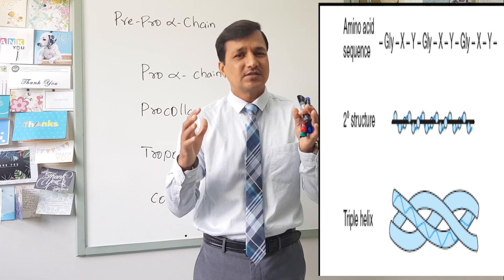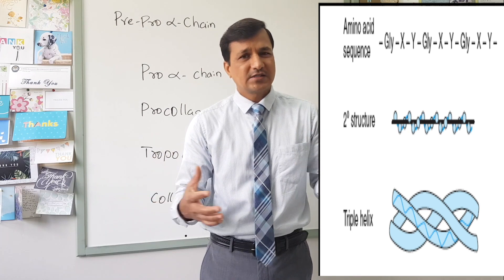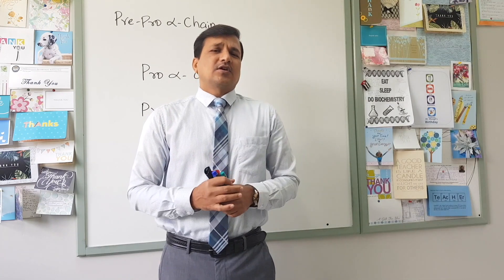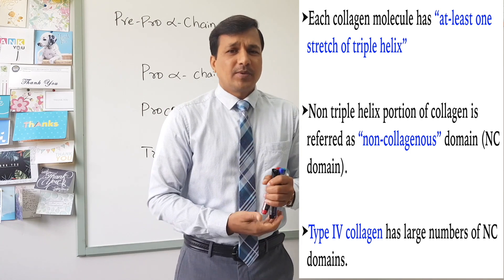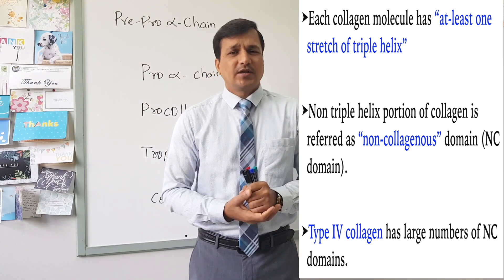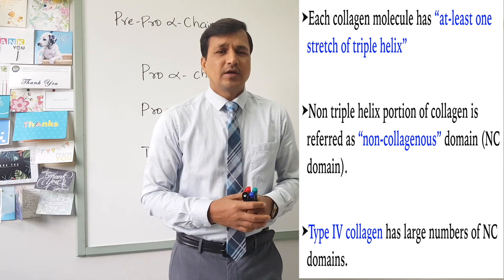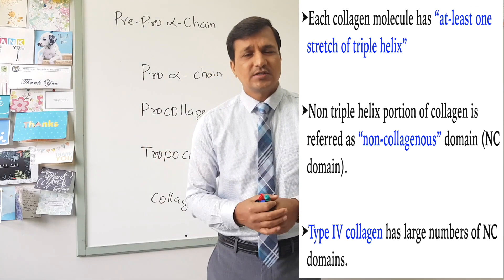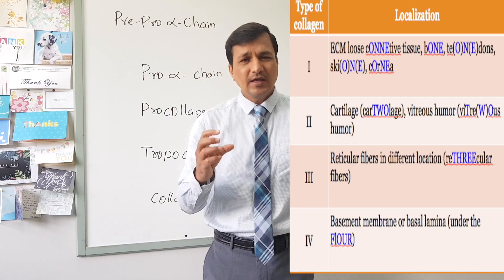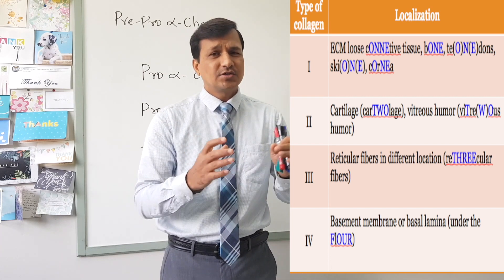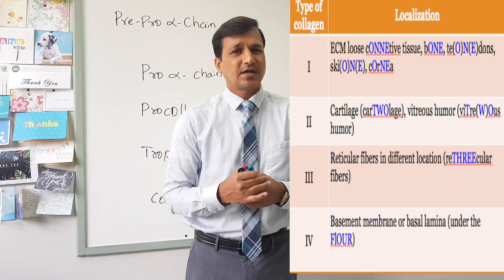Note that in a collagen molecule the structure is called an alpha chain — it is not an alpha helix structure. These collagen molecules can be found at different places in our body. Type 1 collagen is found in connective tissues, bone, and tendons. As shown in the table here, any tissue in our body that ends in '-one' generally contains type 1 collagen.